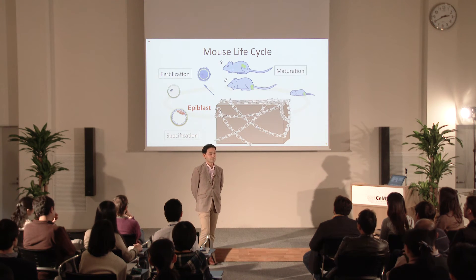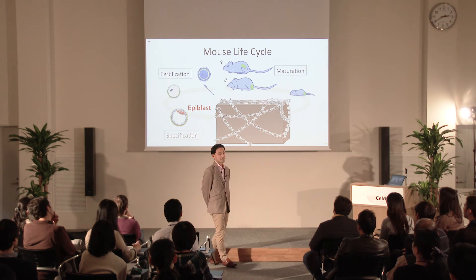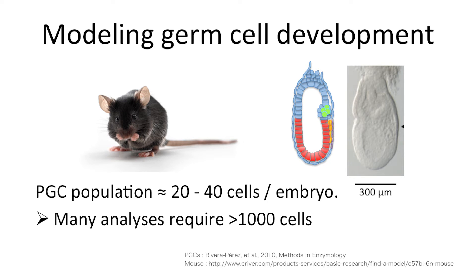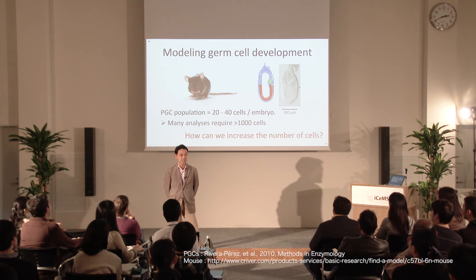Even with mouse, until recently we didn't know what is inside the black box. One key reason is that the PGC population is quite small — only 20 to 40 cells in the embryo at this stage. Recent advances in technology allow us to do analyses in single cells, but many functional analyses require thousands or even millions of cells. It is not realistic to harvest thousands of embryos for just one assay. So the question is: how can we increase our materials?